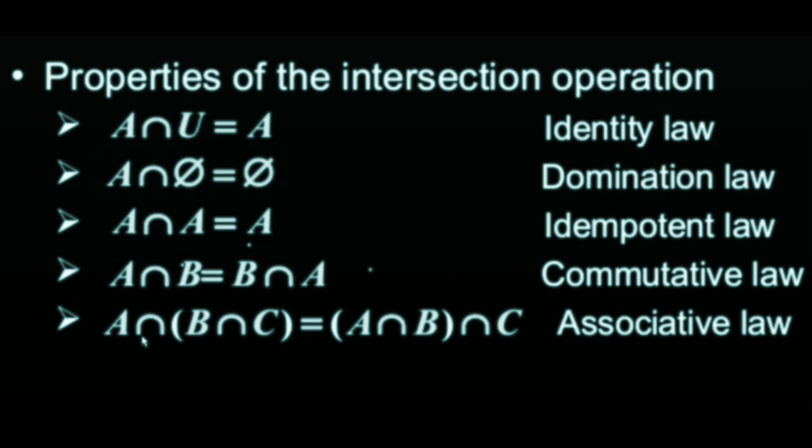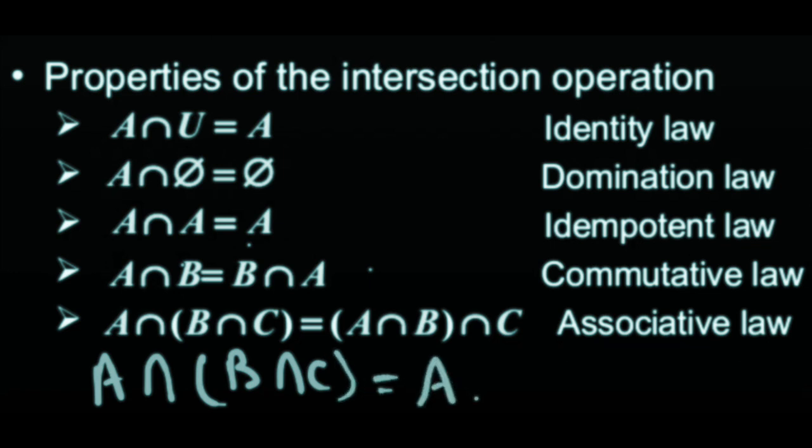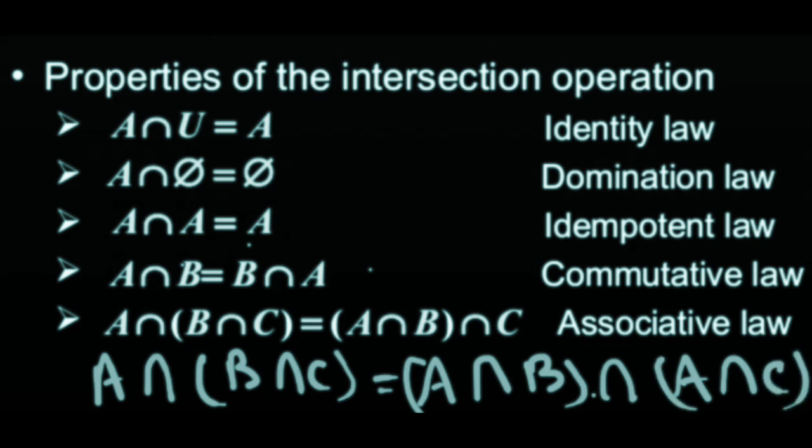Associative law: A intersection B intersection C equals A intersection B intersection C. This is called distributive property.